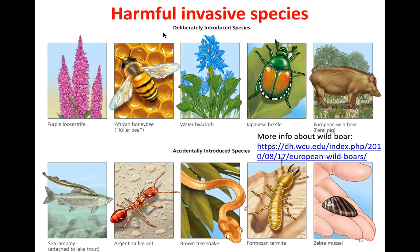Here are some examples of harmful invasive species. The top row were deliberately introduced: purple loosestrife, the African honeybee (known as the killer bee), water hyacinth, the Japanese beetle, and the European wild boar. Accidentally introduced species include the sea lamprey, Argentine fire ant, brown tree snake, Formosan termite, and zebra mussel.